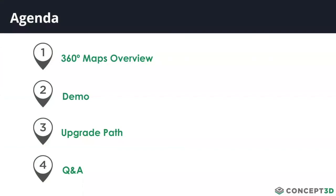As our agenda goes, we'll kick off the webinar going over an overview of 360 Maps, talking a little bit about the functionality, what it looks like, how it's different. Then we have a pre-recorded demo to actually show you 360 Maps in the interactive map environment. We'll spend some time talking about an upgrade path — so if you are an existing interactive map customer, looking at what that process and timeline looks like. And then we've saved some time at the end for Q&A.